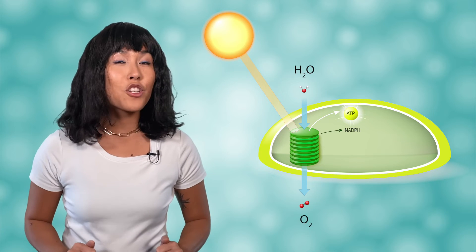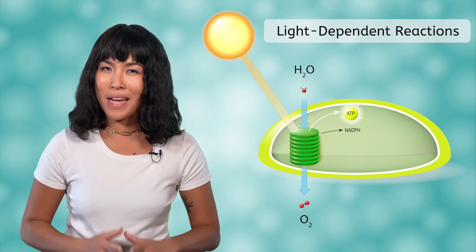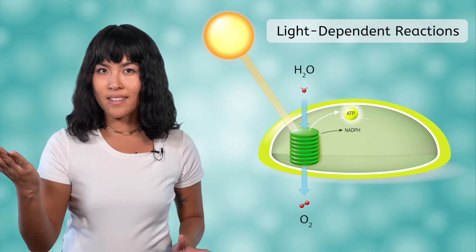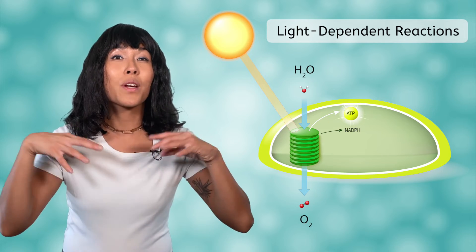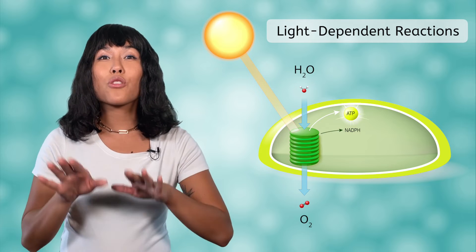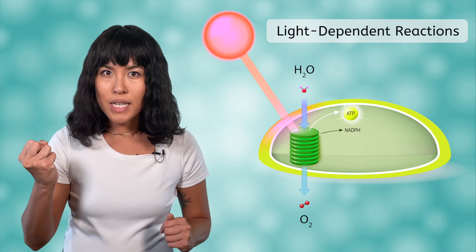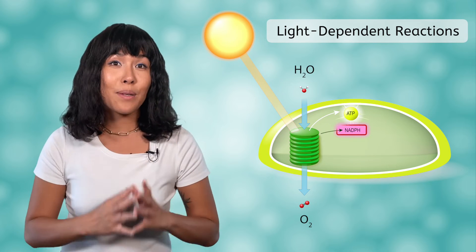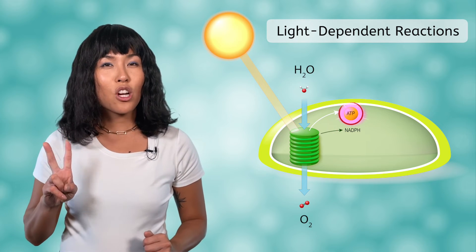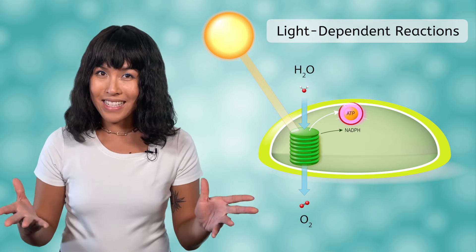Alright, let's take inventory of the reactants and products during the light-dependent reactions. Light energy is required to power the process, and water is required so it can be split as a source of electrons. Through the electron transport chain and hydrogen gradient, the original energy absorbed is used to produce NADPH and ATP. These two products are used in the second stage of photosynthesis, the light-independent reactions.